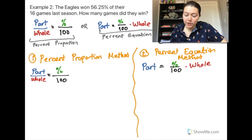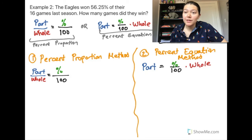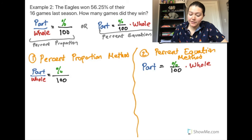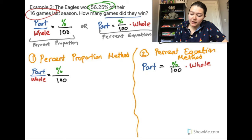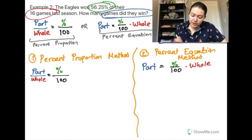For example two, the Eagles won 56.25% of their 16 games last season. How many games did they win? We identify the percent as 56.25%, the whole as 16 total games, and we're finding the part — how many games they won. We substitute this missing information into our proportion.